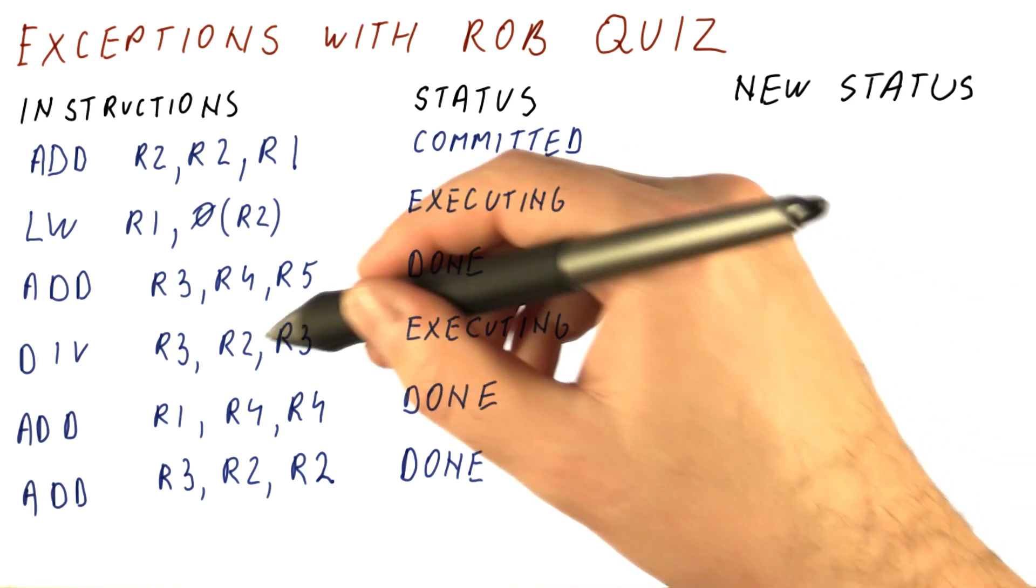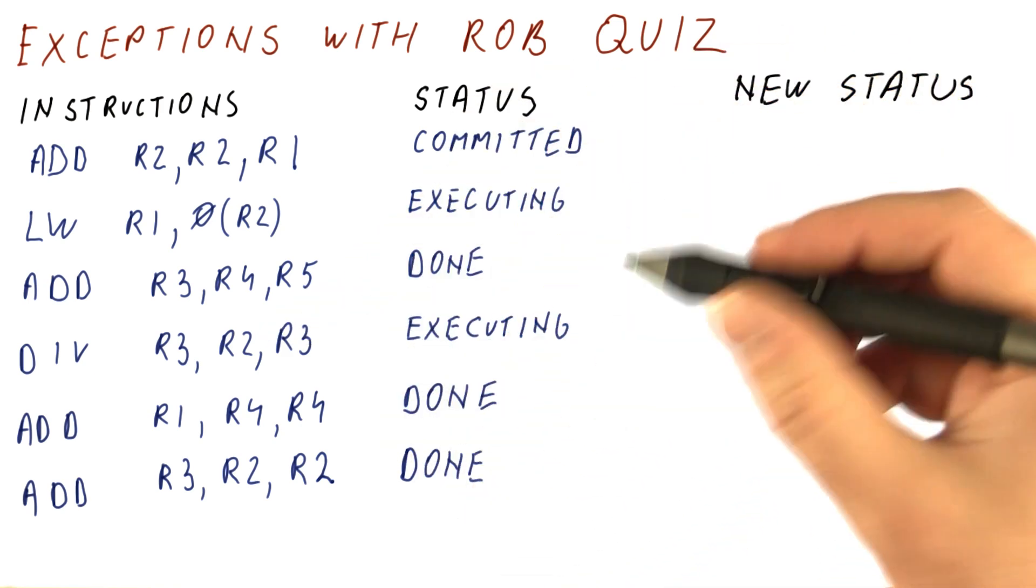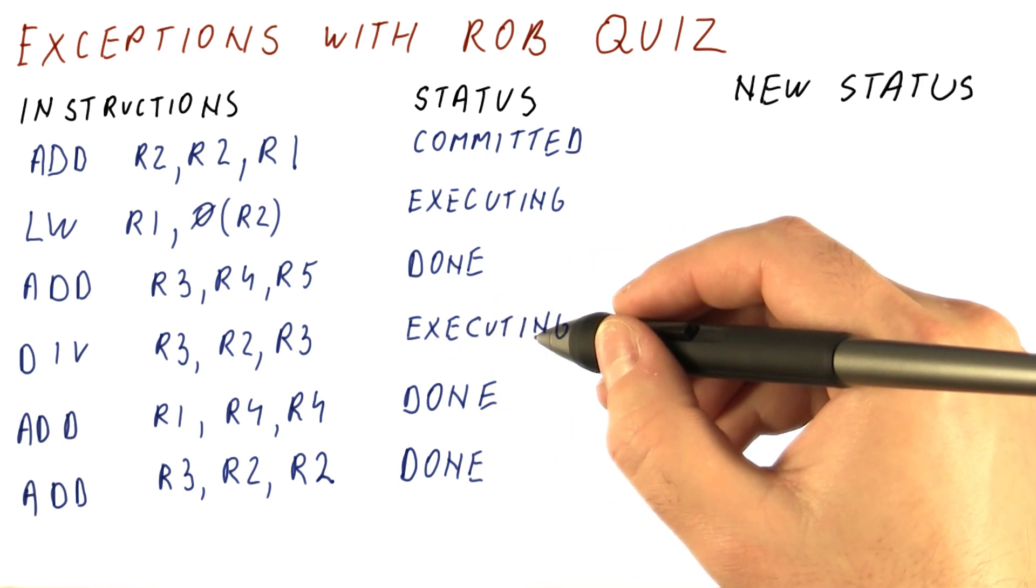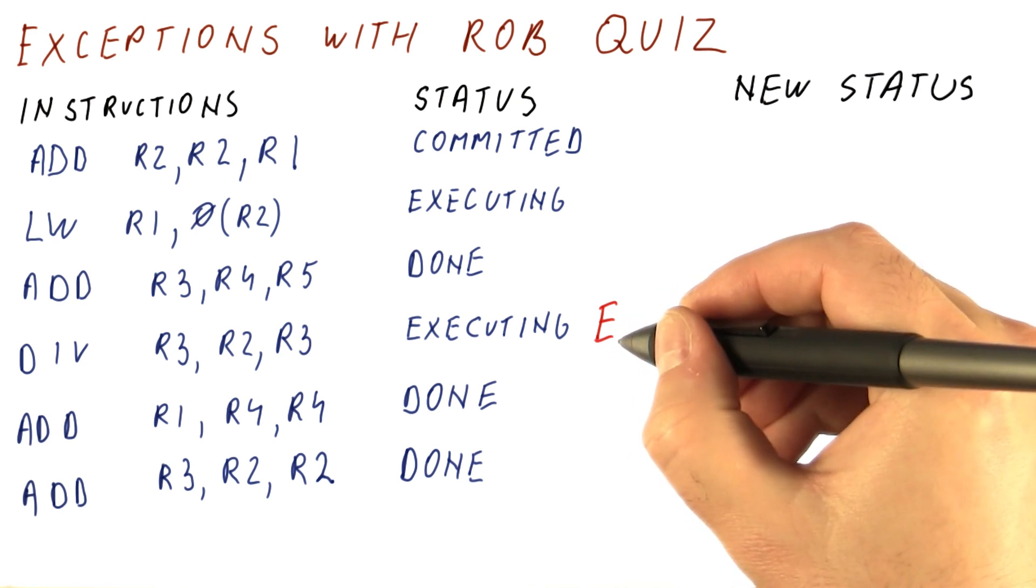Let's say that this divide, when the status of these instructions is like this, has an exception. So while it's executing, we discover, for example, that it's been trying to divide by zero. So this add now has an exception.